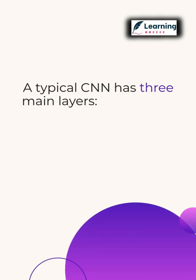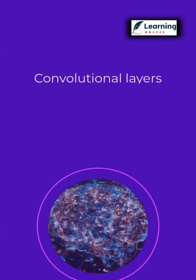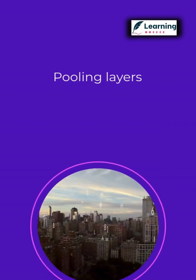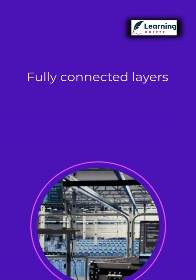A typical CNN has three main layers. Convolutional layers extract features using filters. Pooling layers condense information and reduce complexity. And fully connected layers make the final classification.